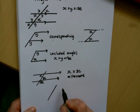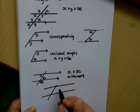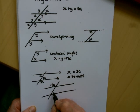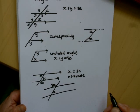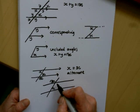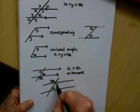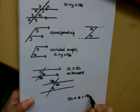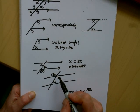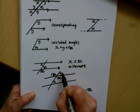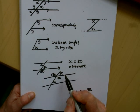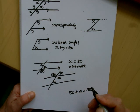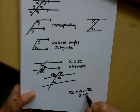Let's do another one. Say we've got the angle there as 130, and we want to find angle A. There are a number of ways we can do this. We could put 130 there and say that 130 plus A equals 180. Or we could have written 50 there, because 130 and 50 make 180, and then these corresponding angles would also be 50. Either way you get the answer of 50.